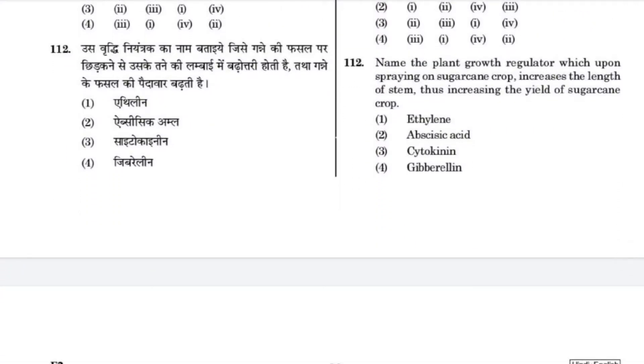Name the plant growth regulator which, upon spraying on sugarcane crop, increases the length of stem, thus increasing the yield. The answer is gibberellin.